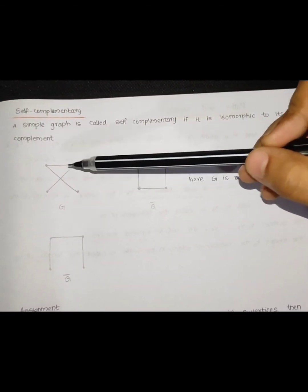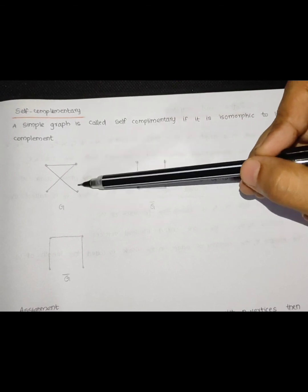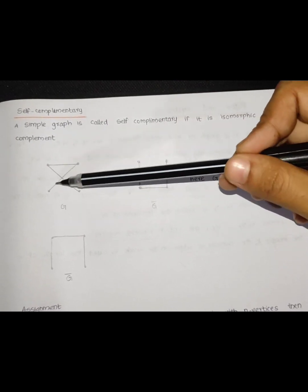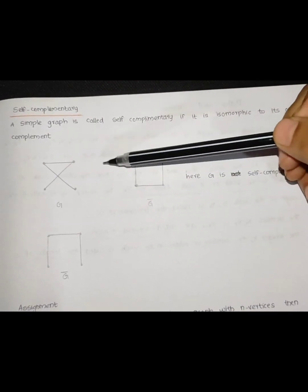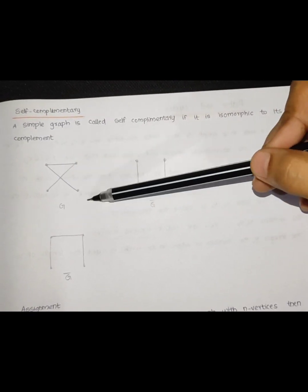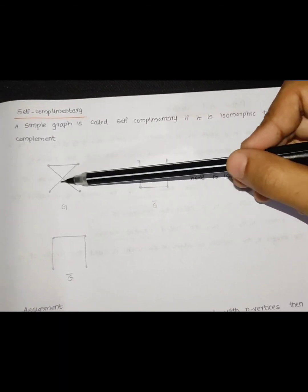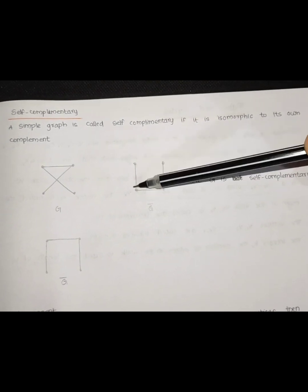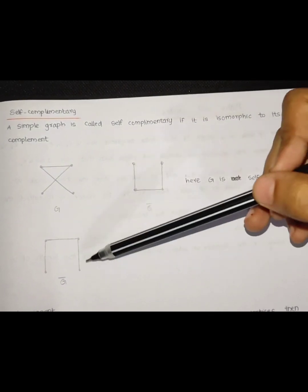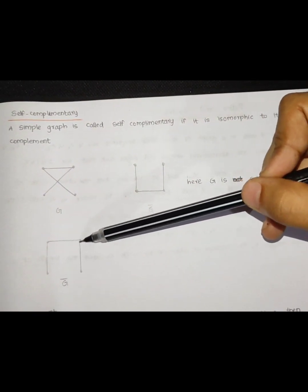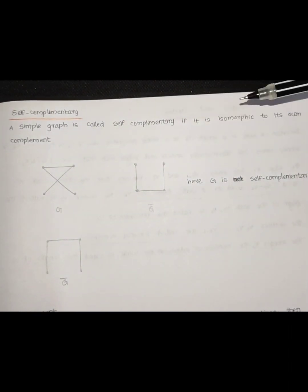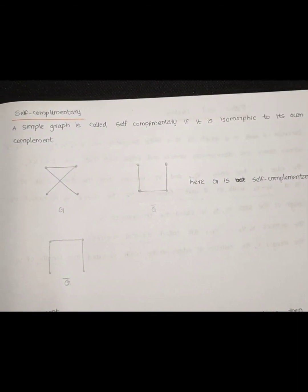This is G and its complement G-bar. If there is no connection between certain vertices in G, those vertices become connected in the complement. This is what makes a graph self-complementary. This is the end of the session. Thank you.